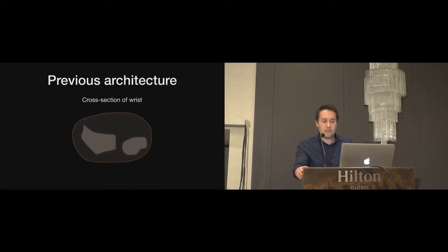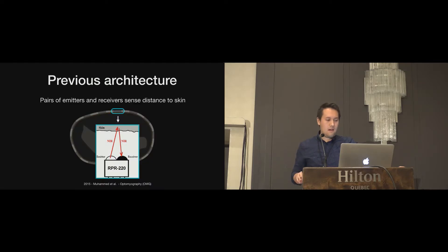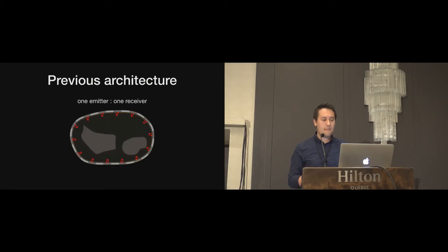So let's look at the previous work in a bit more detail. Here's a cross section of a wrist, and this might be a typical bracelet with infrared sensors embedded. There will be multiple pairs of emitters and receivers of infrared light. These each sense the distance to the skin, and thereby sensing the deformation of the shape of the wrist. It is important to note here that each pair works individually in this configuration. So I'll refer to this as a one-to-one emitter to receiver configuration.